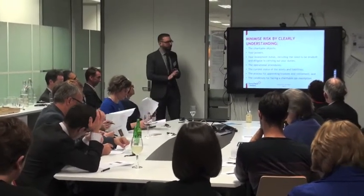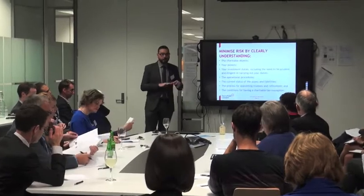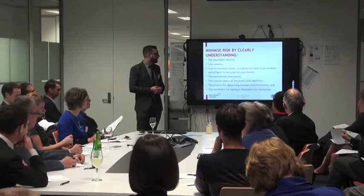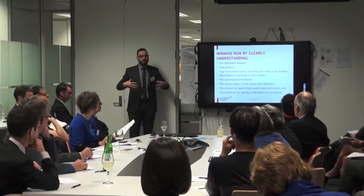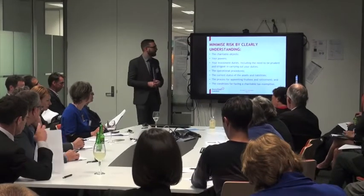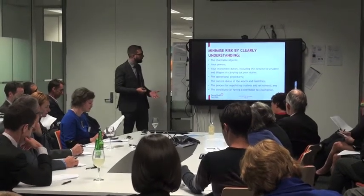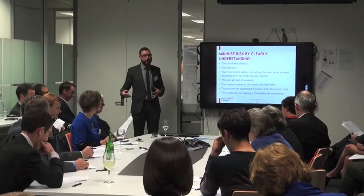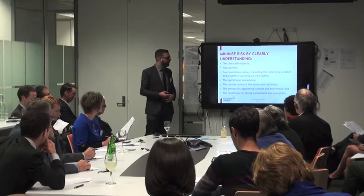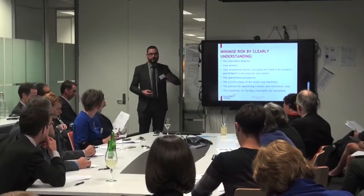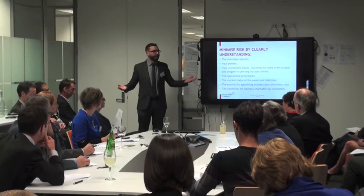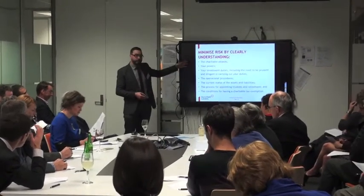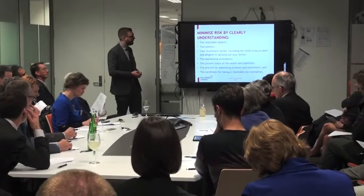So how do you minimize the risks you face personally as a trustee or officer of a not-for-profit? The first point is understanding what does this entity exist for, and are we doing what we exist for? What are your charitable objects and purposes? And what powers exist — what am I allowed to do, and what am I not allowed to do? For example, if the entity is asked to give a guarantee for somebody else, do we have the power to do that under our trust deed? Understanding the limits on what you're allowed to do is critically important.